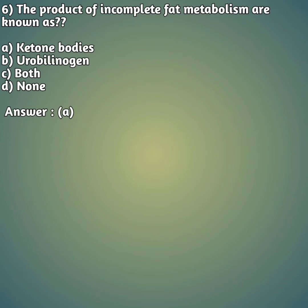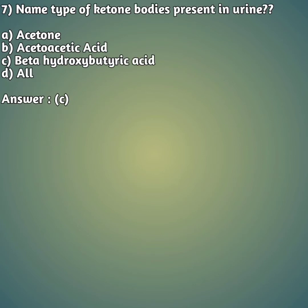Sixth question: the product of incomplete fat metabolism is known as — option A: ketone bodies, option B: urobilinogen, option C: both, option D: none. Your right answer is option A — ketone bodies.